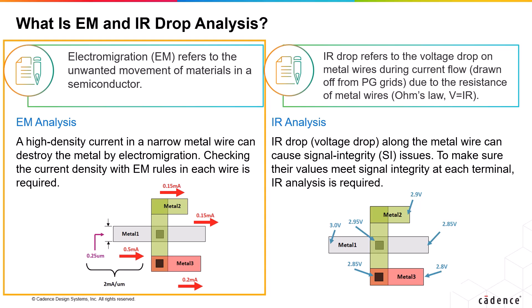Here is a typical picture where we have a metal one, and that gets branched into a couple of other metals — higher metals, metal two and metal three. You can see that half a milliampere is traveling over metal one, which ultimately gets divided into three fingers: 0.15 milliampere in a couple of fingers, and 0.2 milliampere on the other one. There is a heavy chance of EM happening on metal one, where the higher current is passing through.